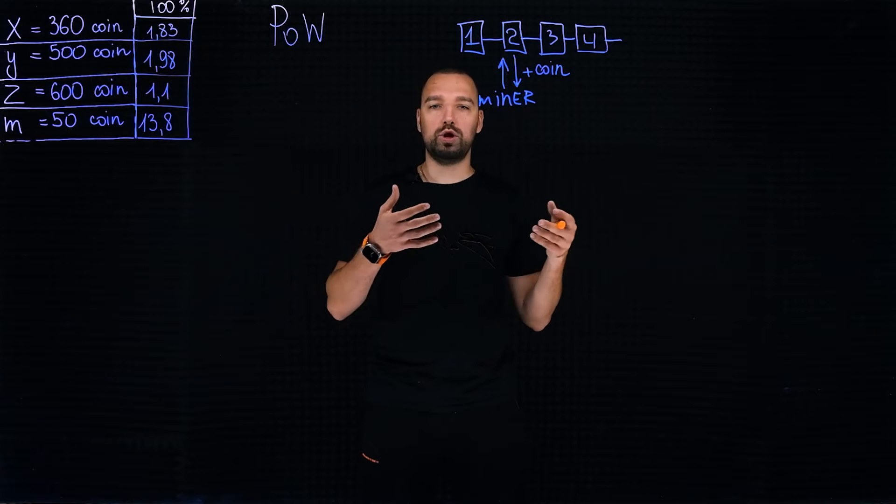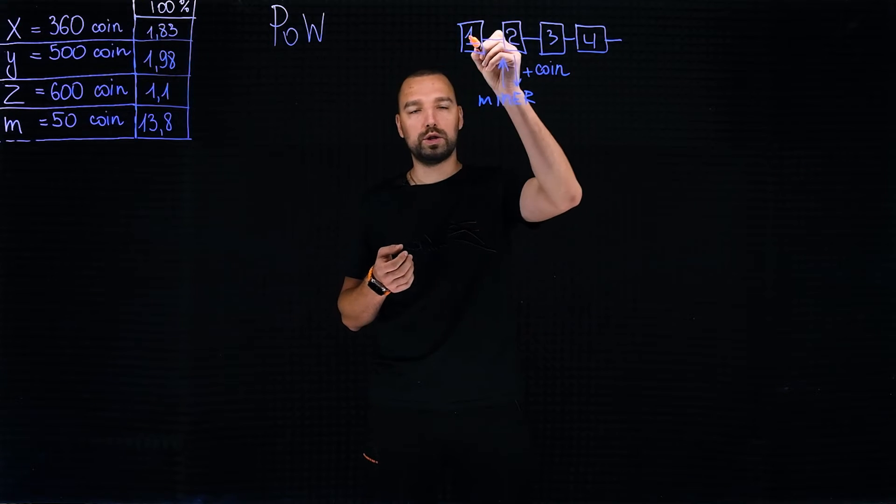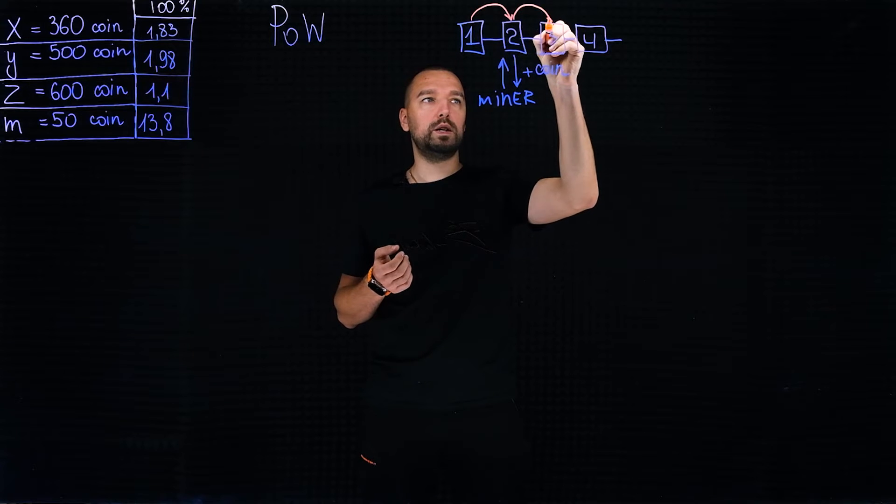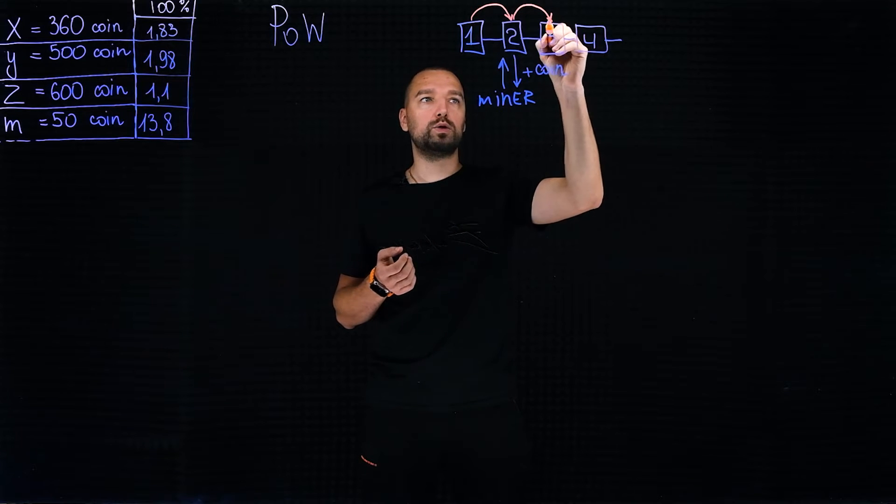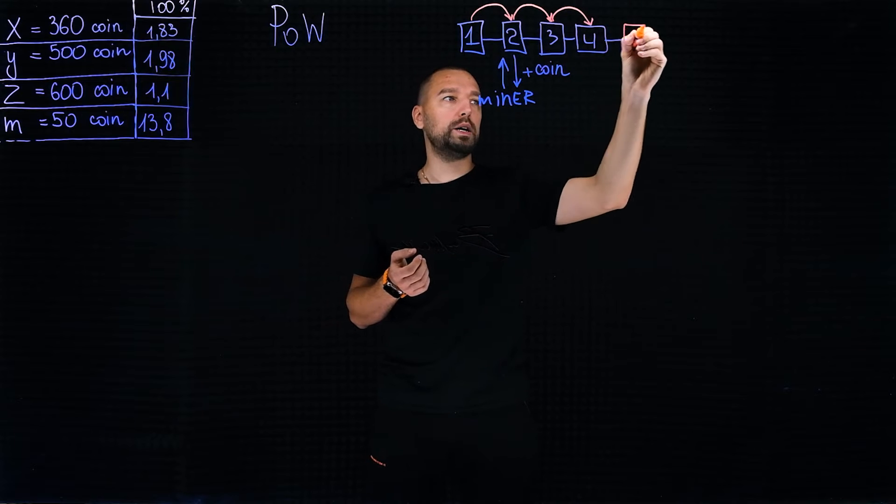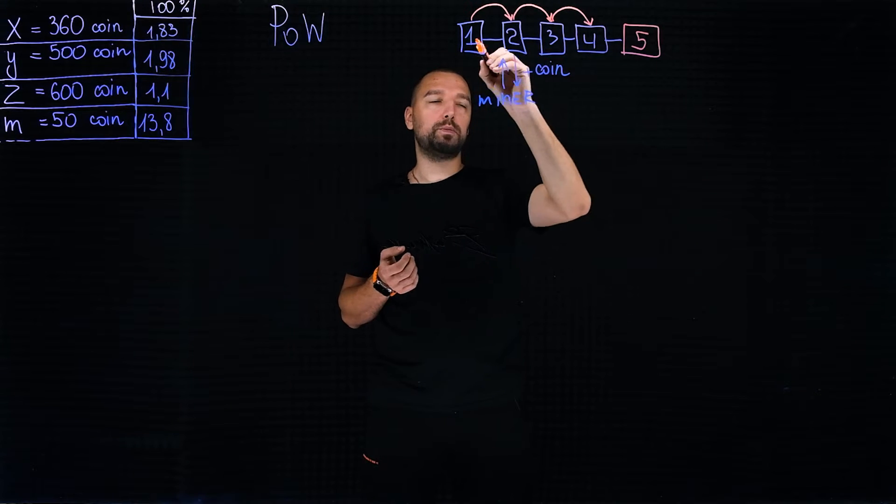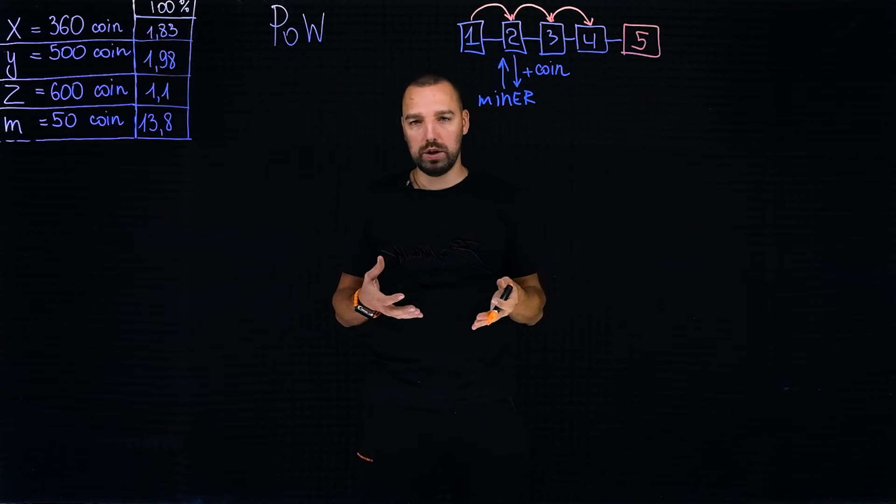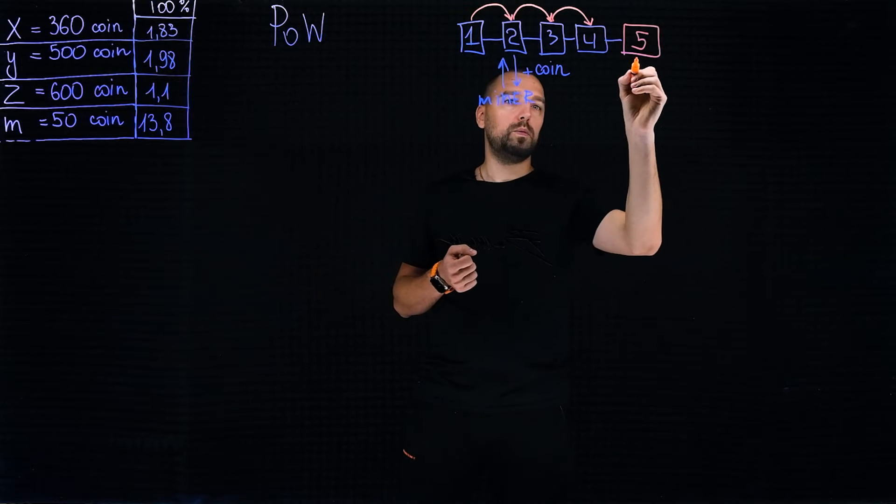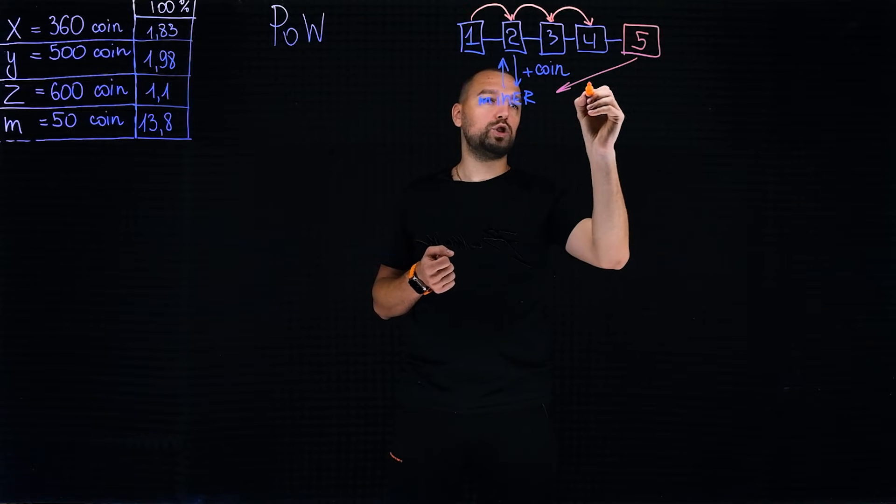In order to record the next block, the miner needs to return to the first event and check the chronology of events. Indeed, the first follows the second, the second follows the third, the third follows the fourth. In order to write the fifth block, if the rechecked data is true, the fifth block appears and the miner receives additional coins.